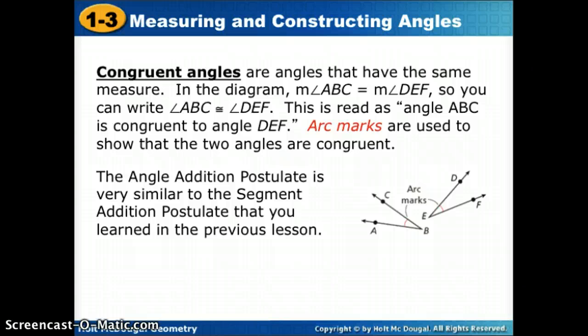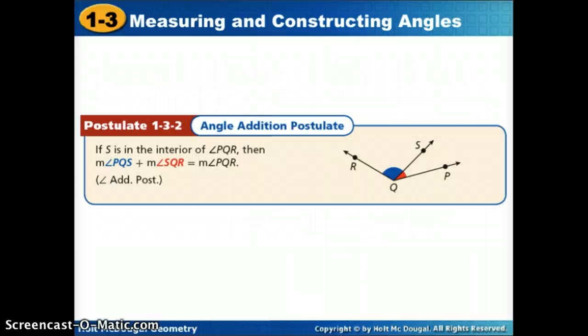Everything from here on out is the same as what we learned in the last lesson, but with angles. We had the segment addition postulate, part plus part equals whole. Now we're going to have the angle addition postulate, which is also part plus part equals whole, but with angles. Here's our angle addition postulate. We have the blue part plus the red part should give us the whole measure, PQR.